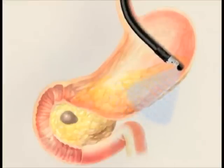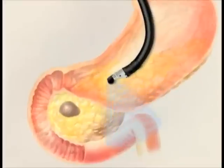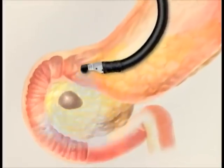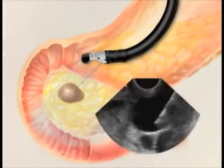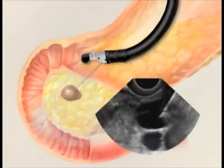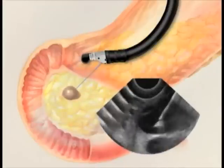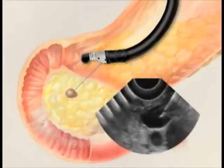After thoroughly checking the pancreas, the endoscope is positioned over the cyst that was discovered. The cyst is carefully examined to detect any abnormality. A very fine needle is passed through the wall of the stomach or duodenum and into the cyst, and suspicious areas can be sampled.